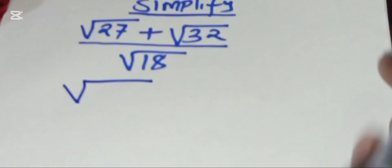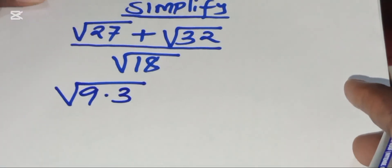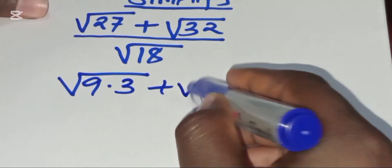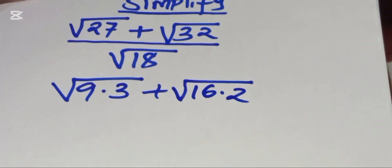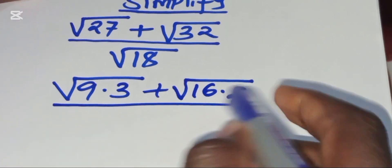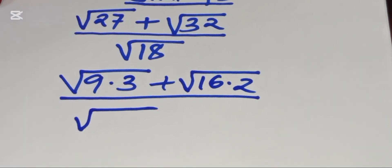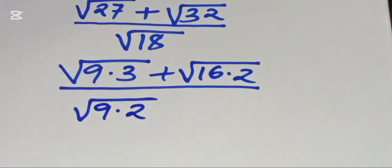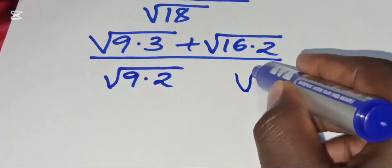We rewrite square root of 27 as square root of 9 multiplied by 3, then plus square root of 32 expressed as square root of 16 multiplied by 2. This is divided by square root of 18, which can be expressed as square root of 9 multiplied by 2.